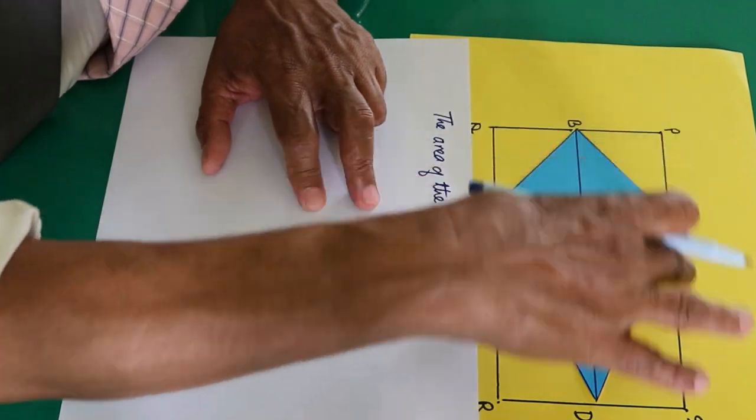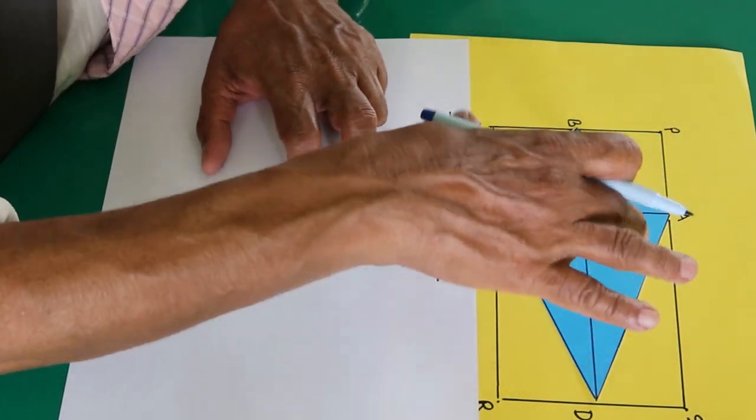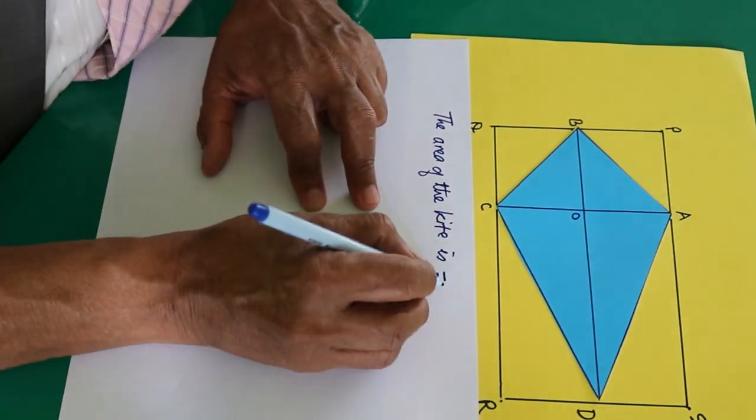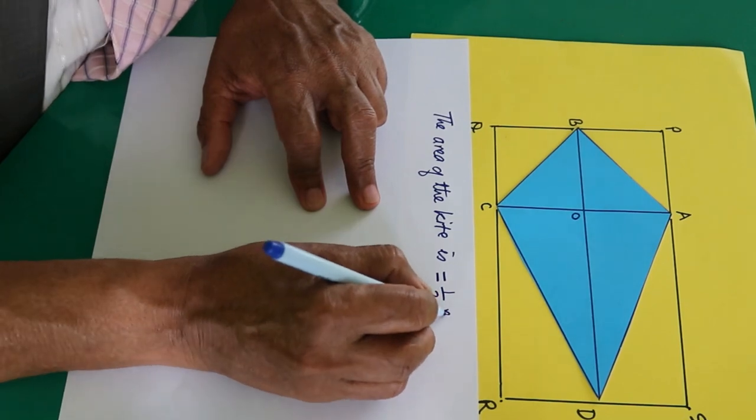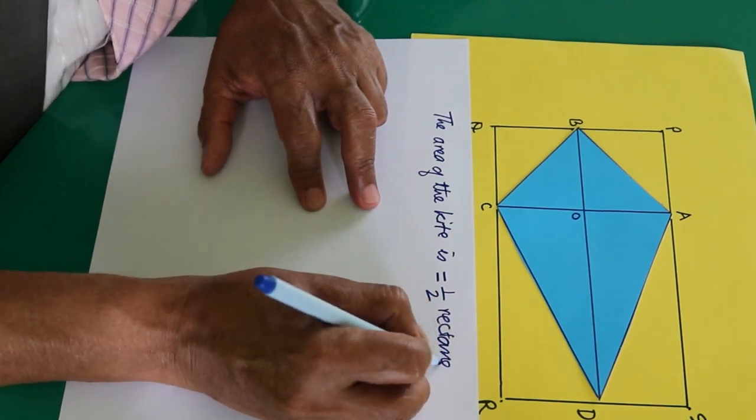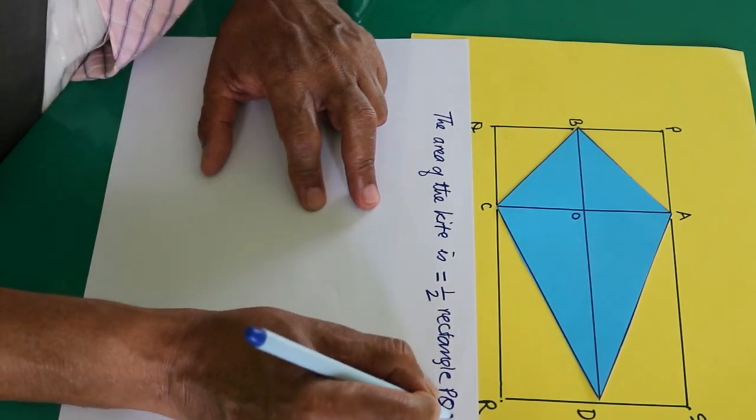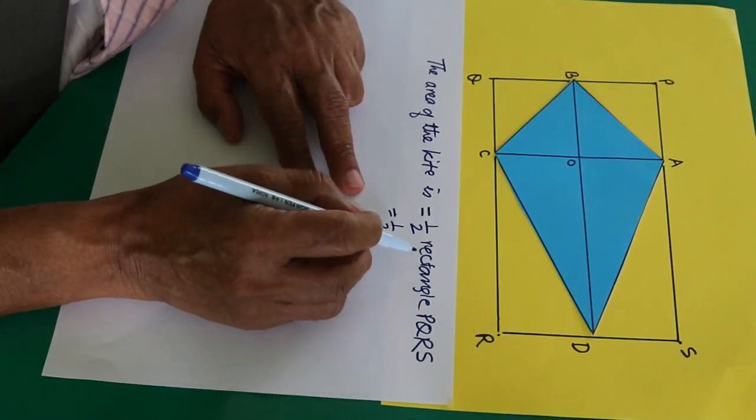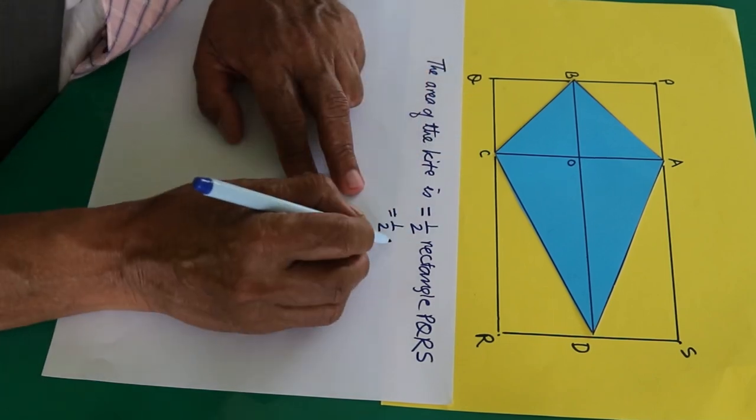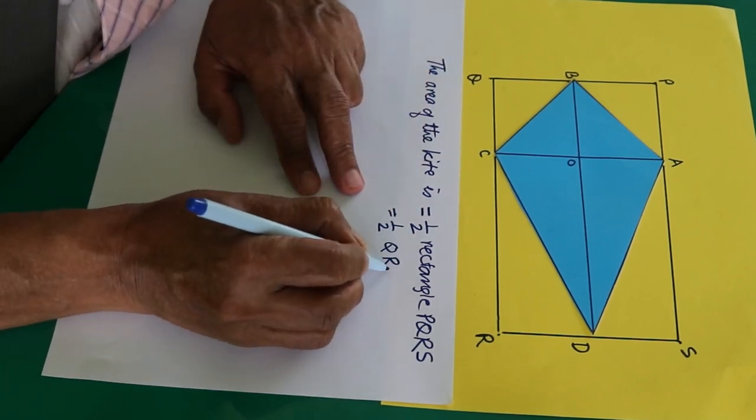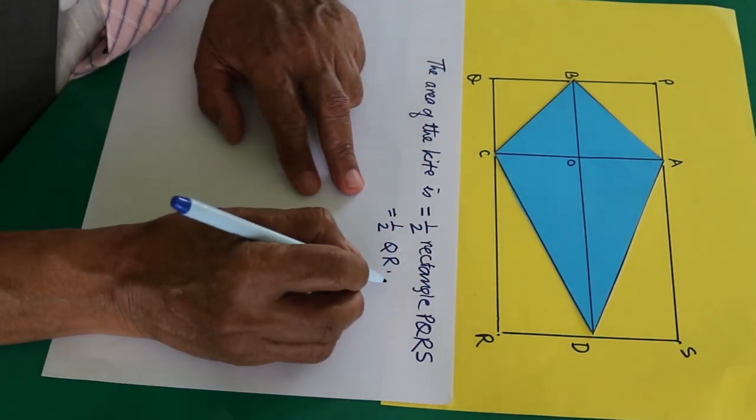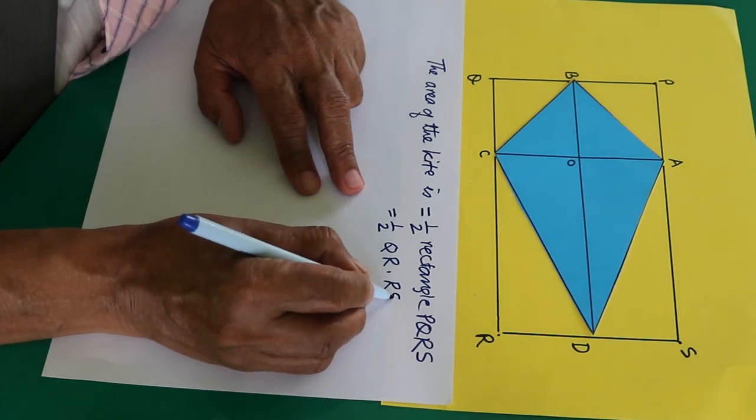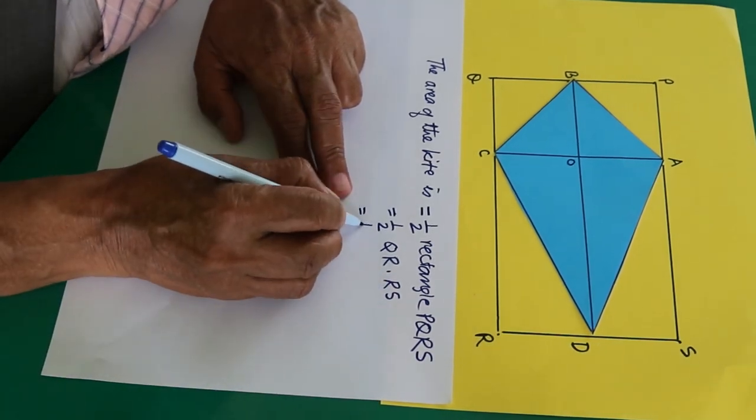I had said this rectangle contains two kites in it, congruent kites in it. That is why it is half of the rectangle PQRS, and a half is here. Area of the rectangle is length into breadth. You can write length is QR into breadth is RS, and this is half.